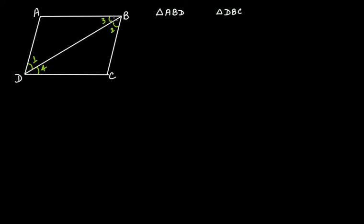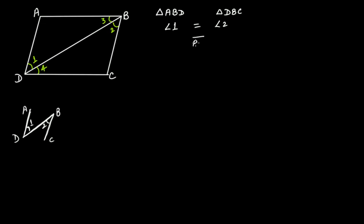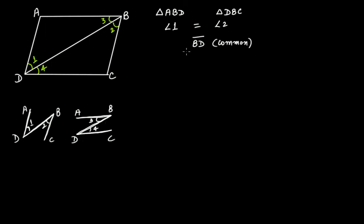Now look at this pair of parallel lines — AD and BC. The transversal gives alternate interior angles, so angle 1 of triangle ABD is equal to angle 2 of triangle DBC. Then side BD is common. And if we look at the pair of parallel lines AB and DC, the transversal gives alternate interior angles, so angle 3 of triangle ABD is equal to angle 4 of triangle DBC.